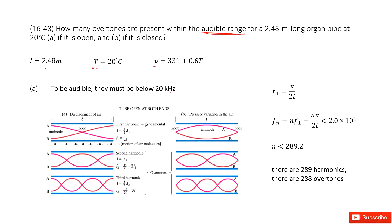We can look at the picture. This is the tube open at both ends, so the pipe is open. The first harmonic or fundamental frequency F1 is V over 2L. And then we have the second harmonic 2F1, and the third harmonic frequency is 3F1. So the N harmonic frequency Fn equals N times F1.